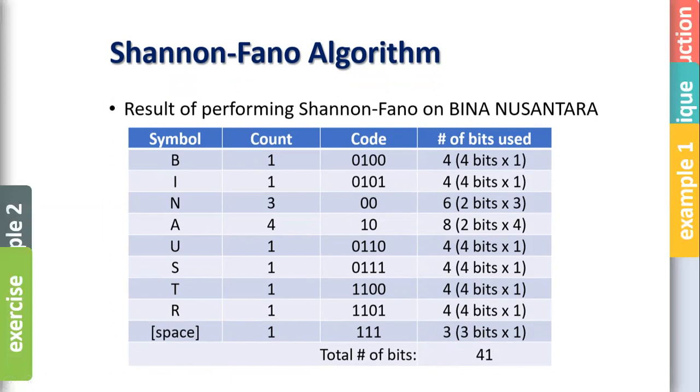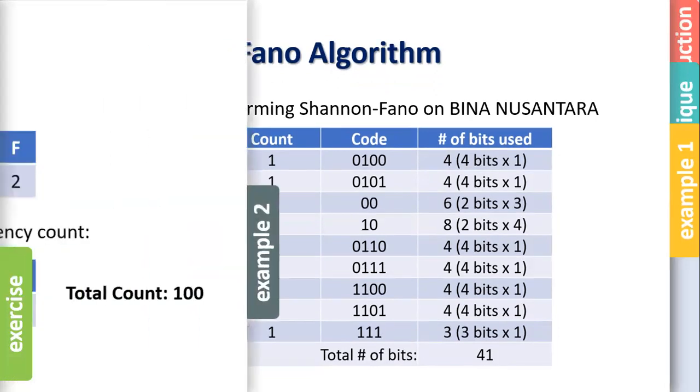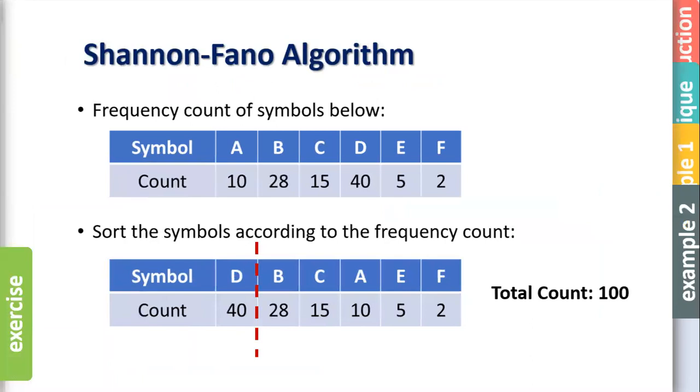I give you another example that's a bit different. So this example is a bit different because I don't give you a sentence, but I just give you six symbols, A, B, C, D, E, F, with frequency already. 10, 28, 15, 40, 5, and 2. Then you need to sort, right? From the highest frequency. So you get D first, B, C, A, E, and F. So if you count, this is 100. When you divide by 2, it's 50.